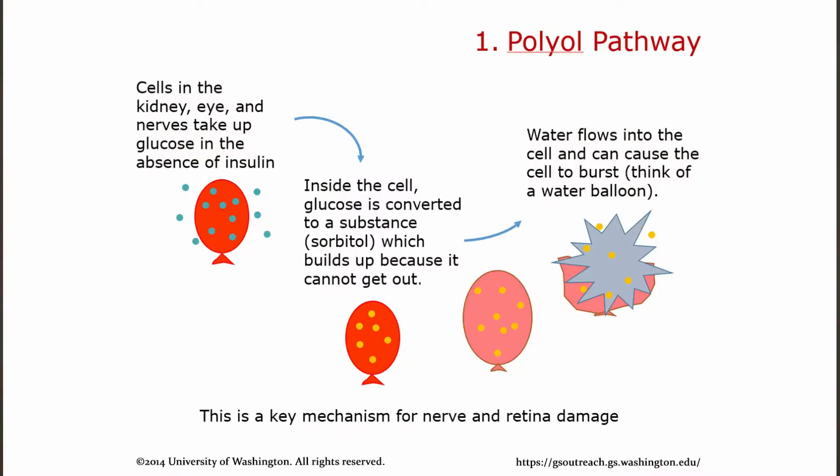To recap: just like with nerve damage, what happens with these pericytes and these veins in the retina is that glucose floods in, they make sorbitol, sorbitol makes water flood in, causing swelling, and eventually they burst. What ends up happening with this swelling is that these little pericytes burst, and over time this causes little bubbles to form in your veins that burst, which end up leaking blood into your retina and maybe even deeper into your eye in the macula.